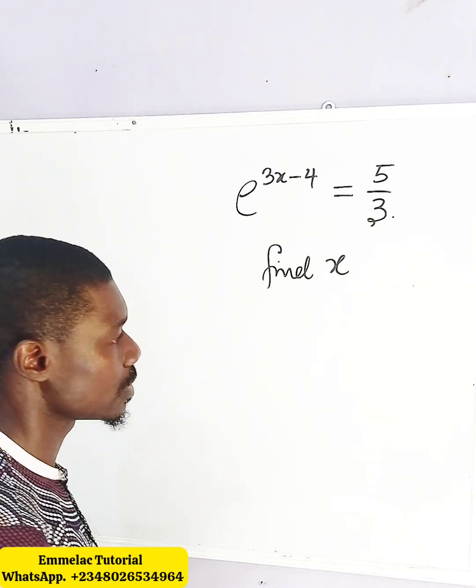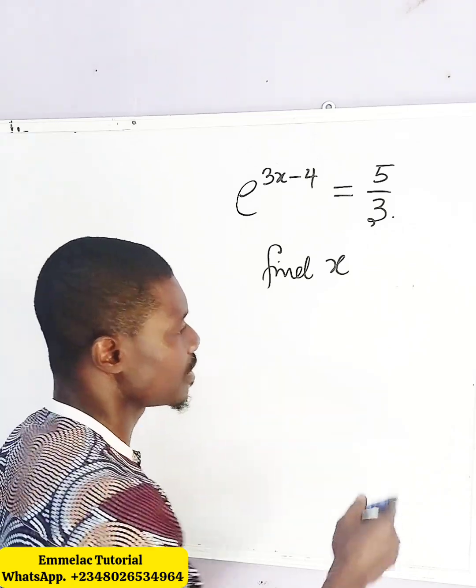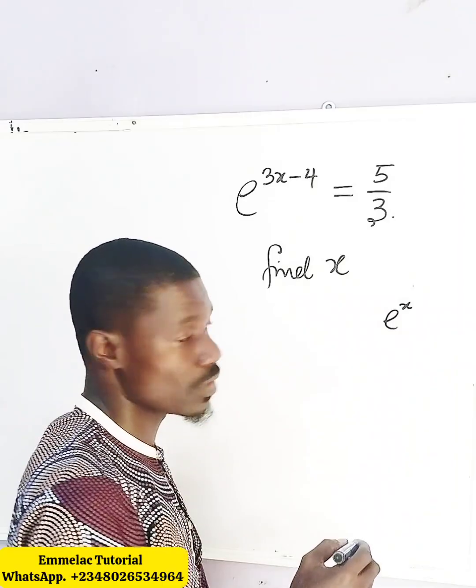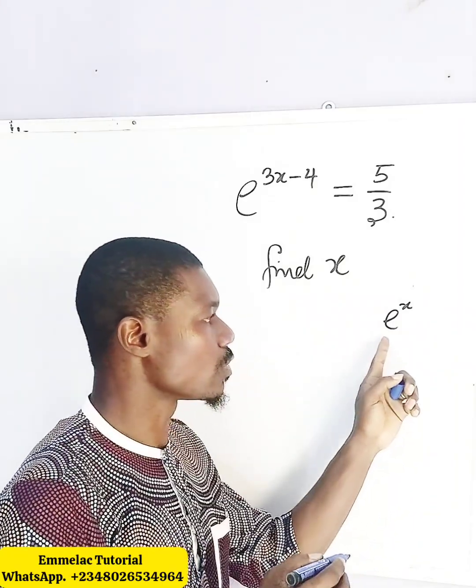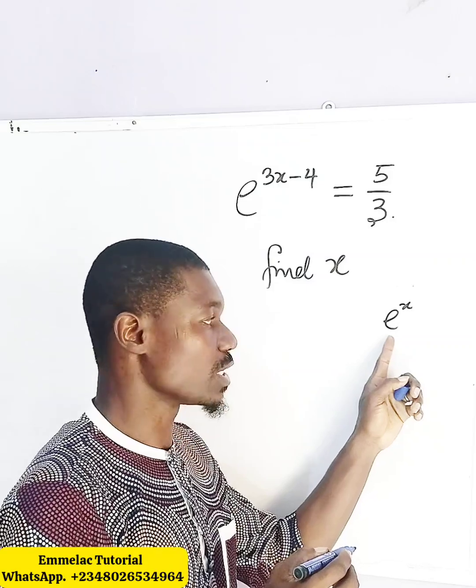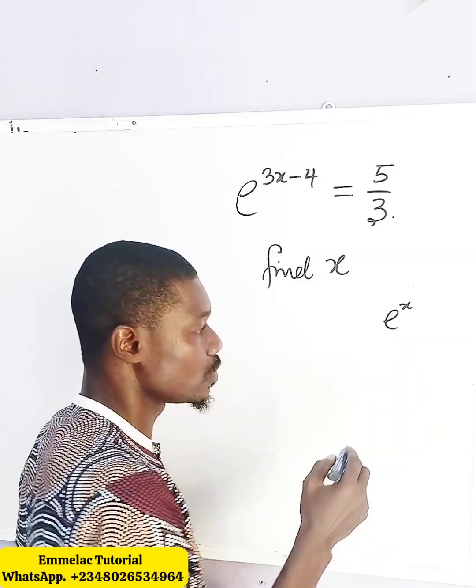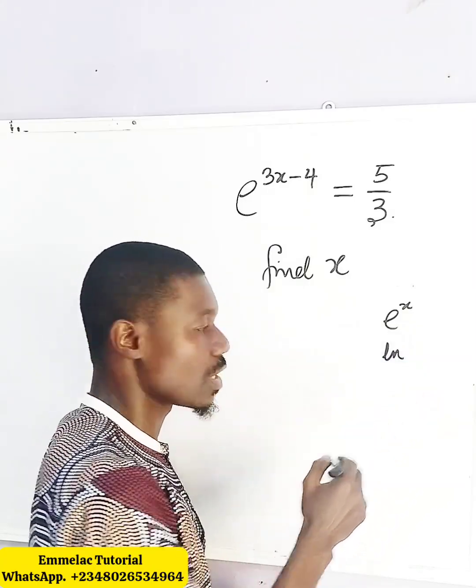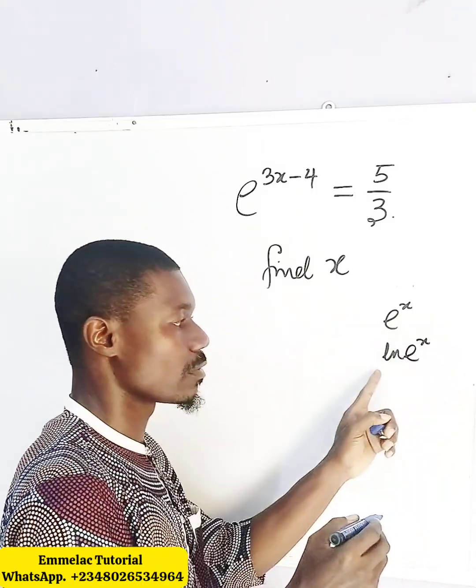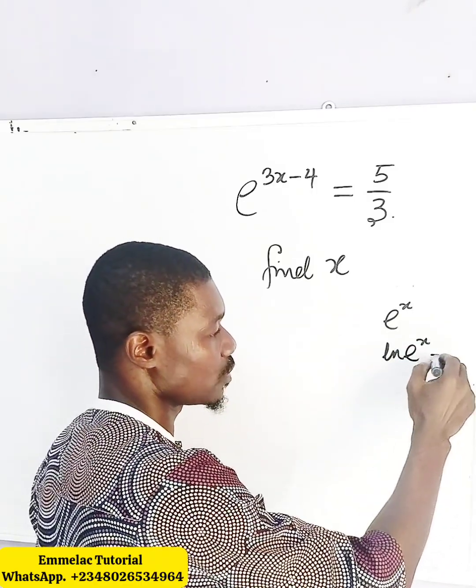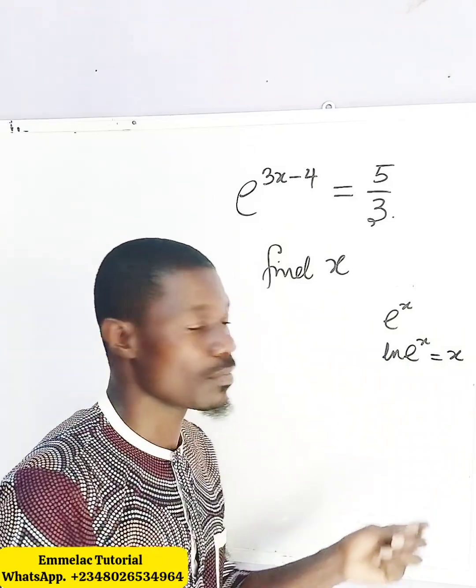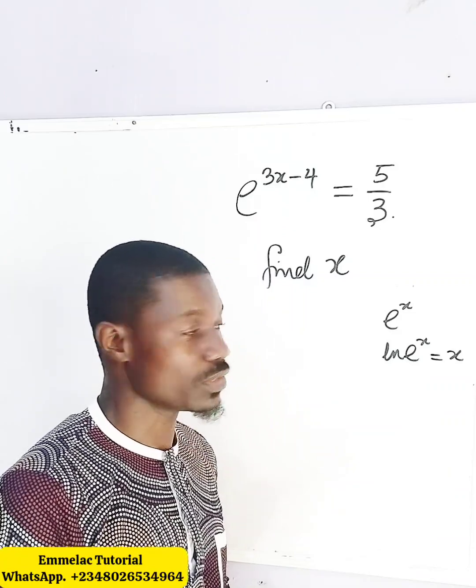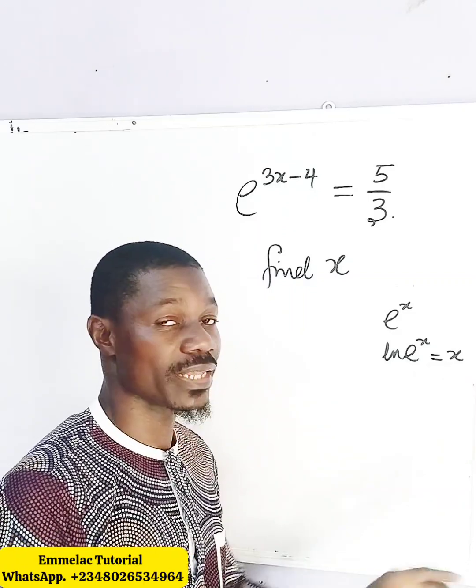So how do we go about it? Let's take note of this: if you have e raised to the power of x, and you want to undo this exponent e, what we need to do is apply the natural log. By doing this, this will give us x, because the natural log will undo the e, which is the exponent, leaving behind x.